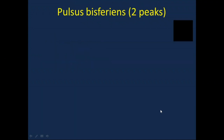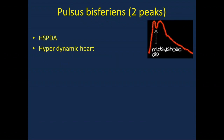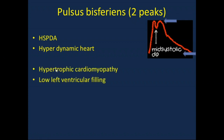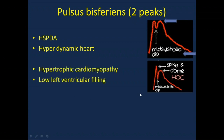You can also have a pulse wave with two peaks — a bifid pulse with a mid-systolic dip, as you can see here. That can be consistent with a hemodynamically significant PDA and a hyperdynamic heart. You may also see two peaks where the first peak is like a spike and the second peak is like a dome. That can be consistent with hypertrophic cardiomyopathy or low ventricular filling.